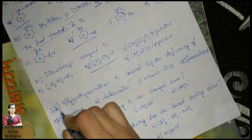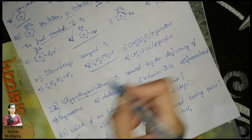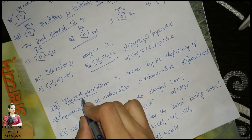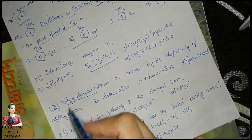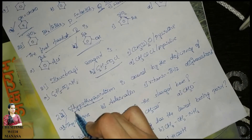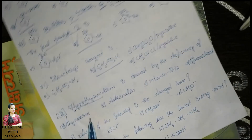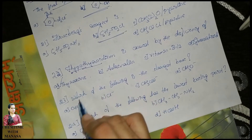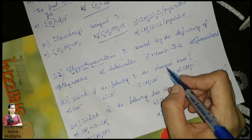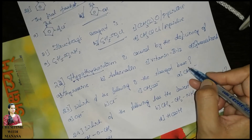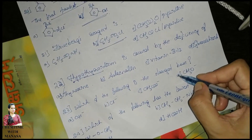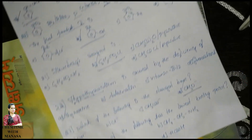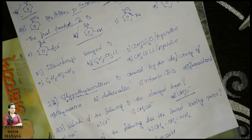Next: hypothyroidism is caused by the deficiency of thyroxine. Hypo means deficiency, hyper means excessive. Next: the strongest base among the options is CH3O⁻.